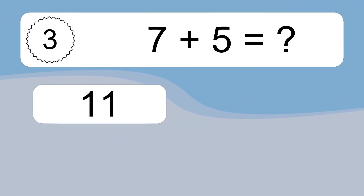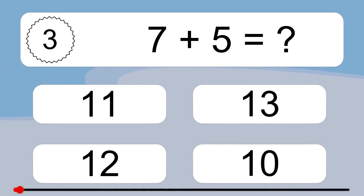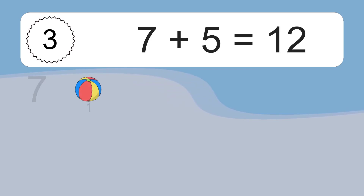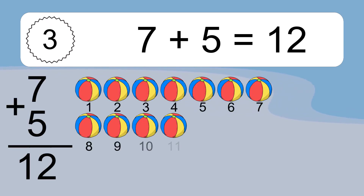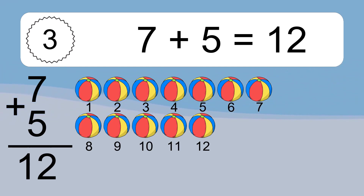7 plus 5 equals what? 7 plus 5 equals 12. Let's count it. 1, 2, 3, 4, 5, 6, 7, 8, 9, 10, 11, 12.